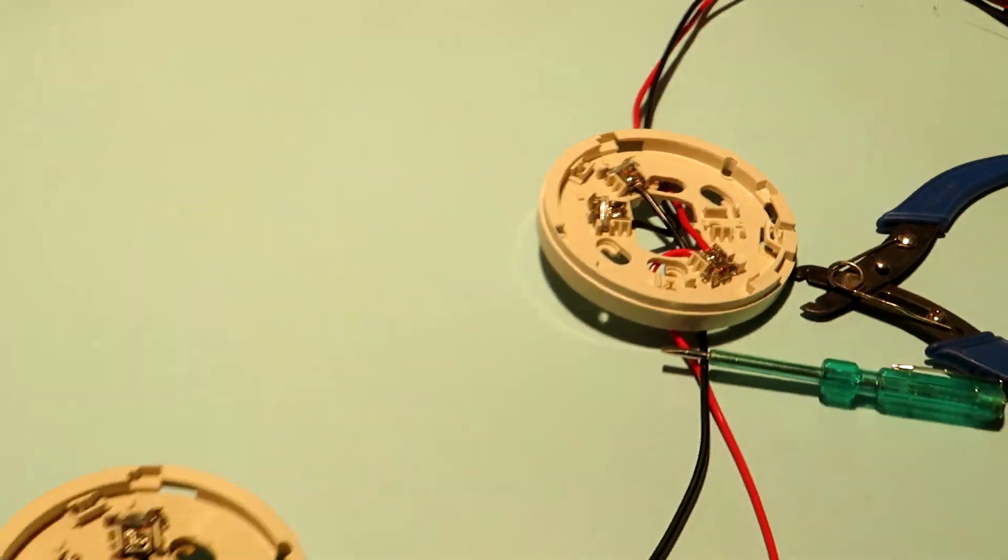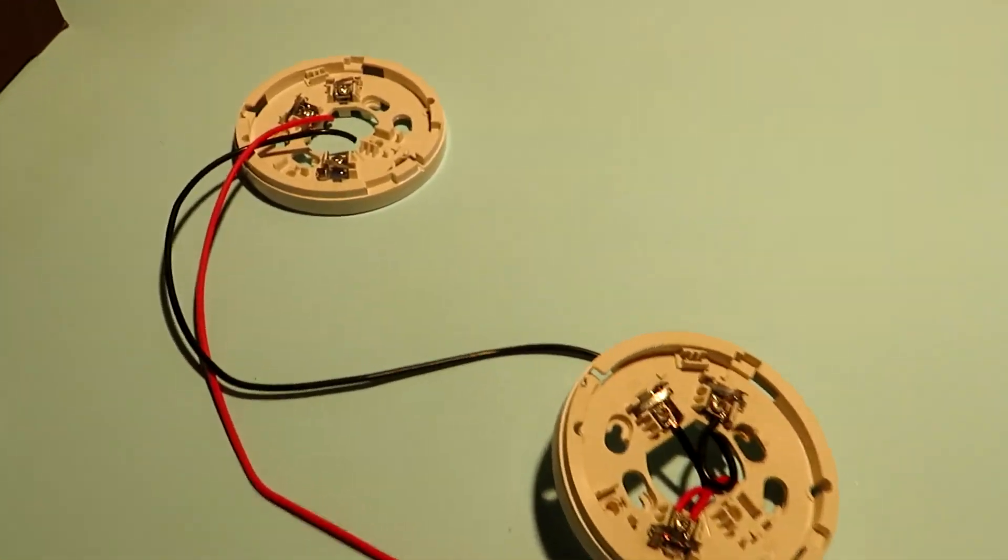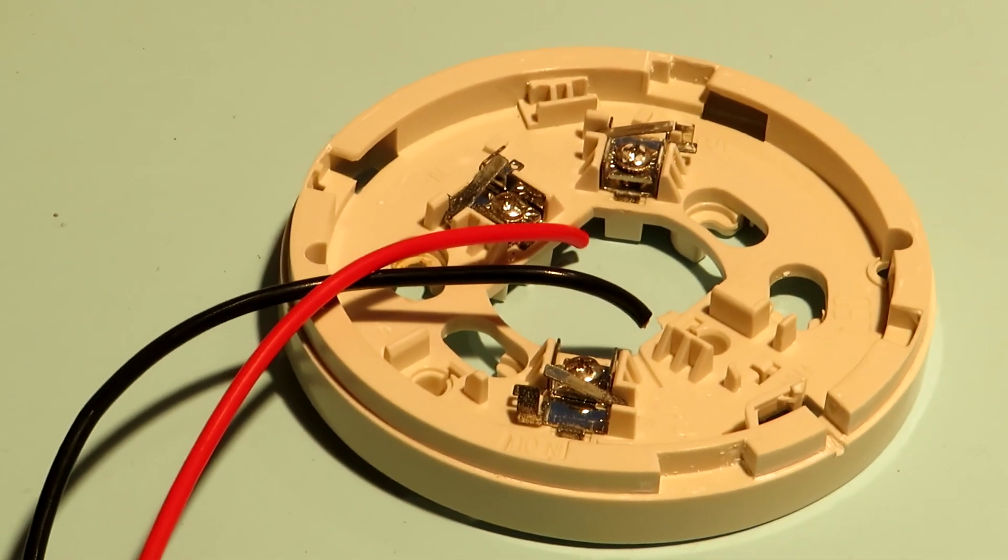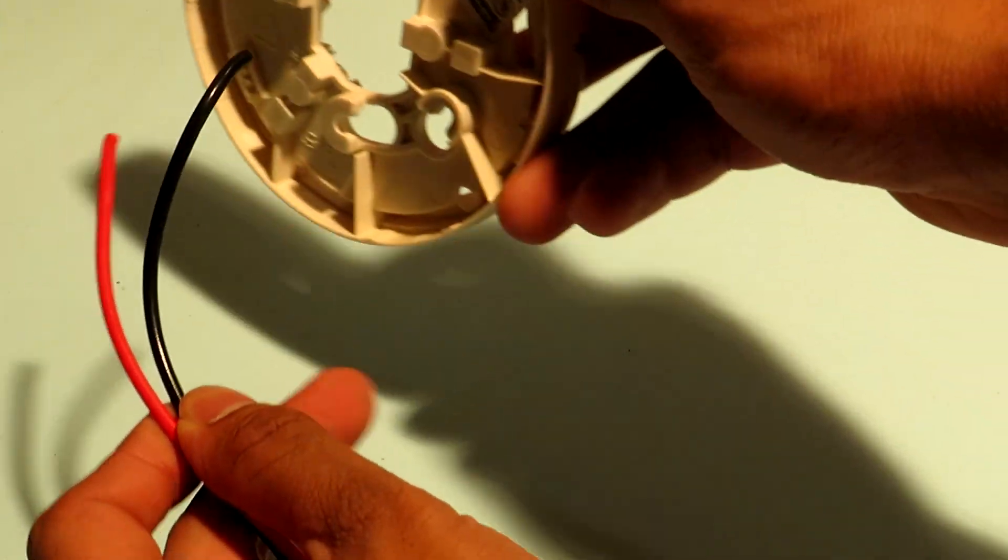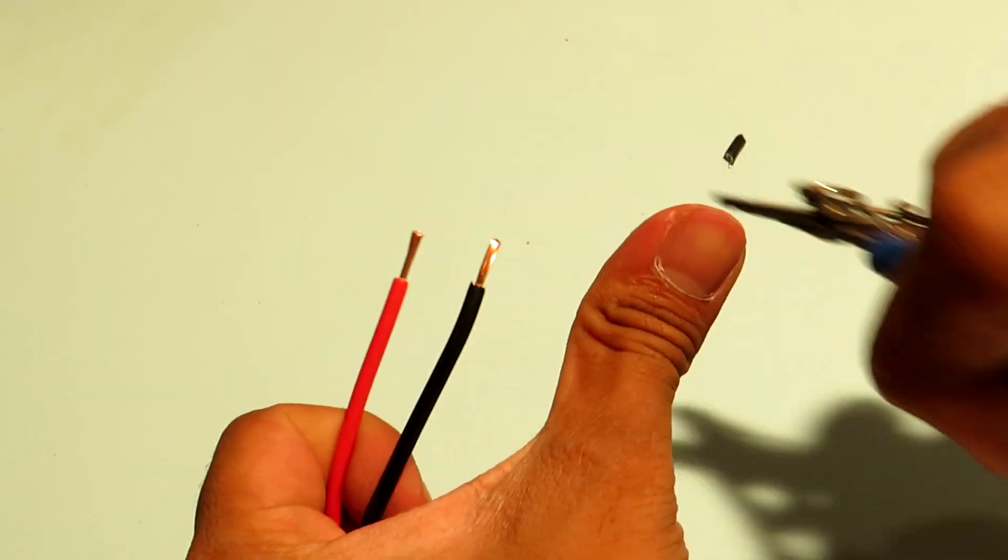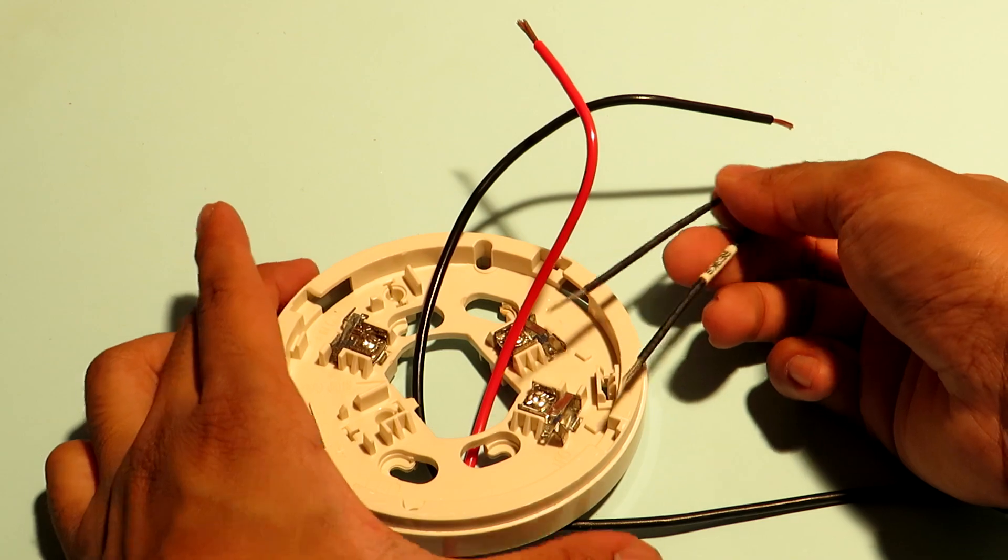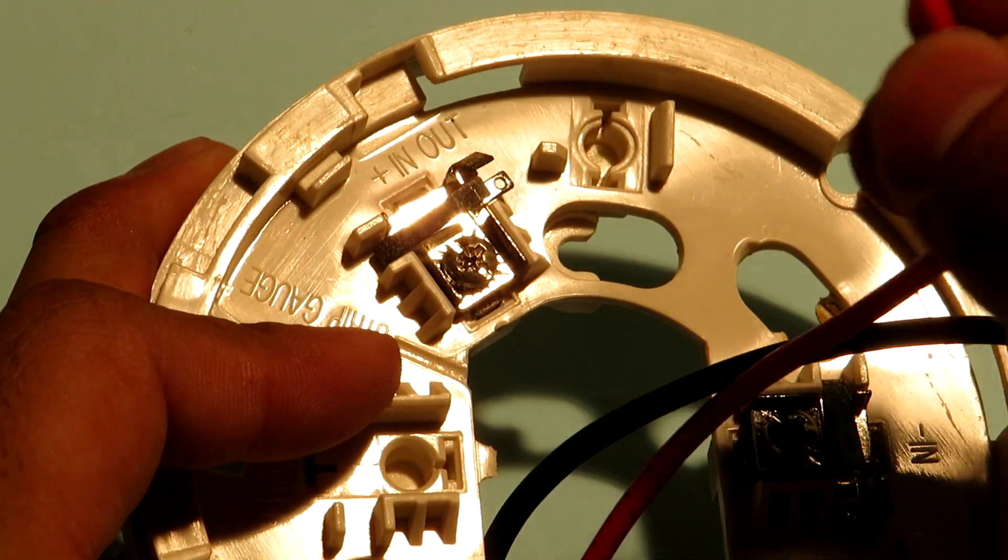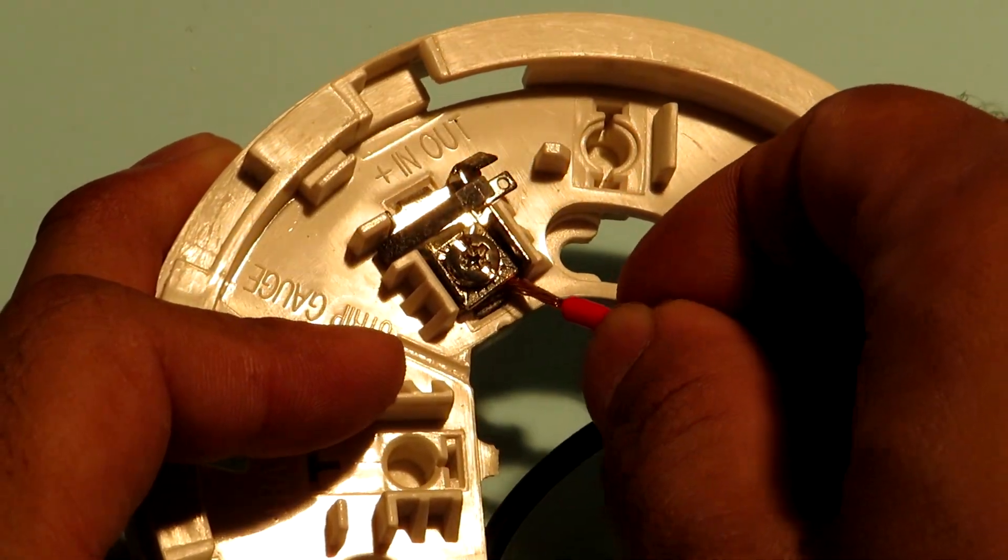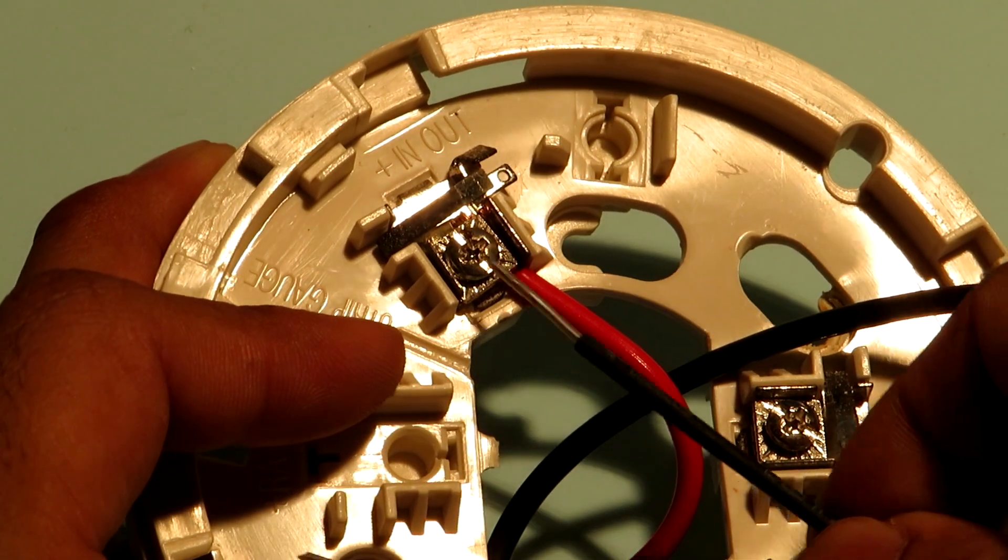So in this way two detectors have been connected in the line successfully and now we have our last detector to connect. So pass the wires through the base and skin them. Since this is the last detector in the loop our EOL resistor will come into picture. So as usual along with connecting the positive wire from the previous detector into the positive in out terminal we'll also have to connect one end of the EOL resistor to this terminal.